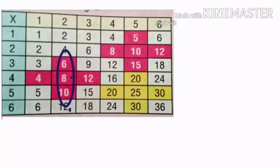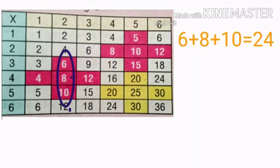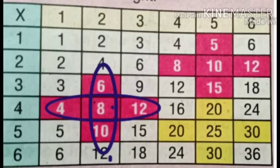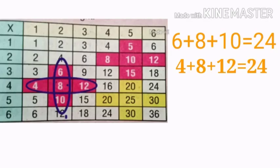See children, look at the next boxes. Which are the numbers from top to bottom? Yes: 6, 8, 10. Let's add these numbers: 6 plus 8 plus 10 is equal to 24. Then which are the numbers from left to right? Yes: 4, 8, 12. Let's add: 4 plus 8 plus 12 is equal to 24. We got the same answers. So children, like this, you should find the sum of numbers in the other yellow colored boxes.